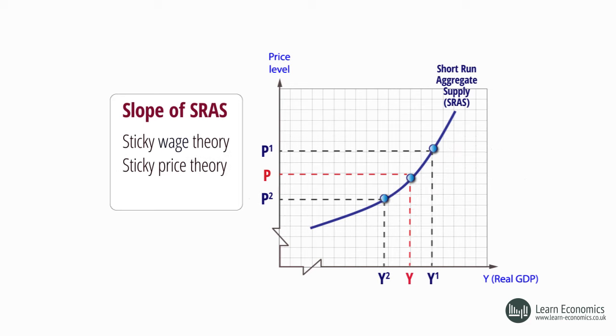Sticky price theory suggests that producer prices for some goods may be slow to adjust to changes in the general price level because there are costs to firms of changing prices, known as menu costs. So, for example, a rise in the general price level, not matched by an immediate rise in some firms' prices, will cause these firms to be more competitive, with an incentive to produce more. A fall in the general price level will make those producers with sticky prices less competitive, and they will cut back on production.